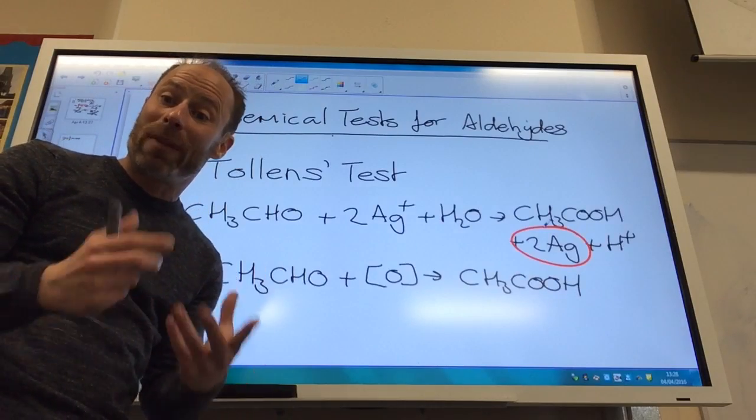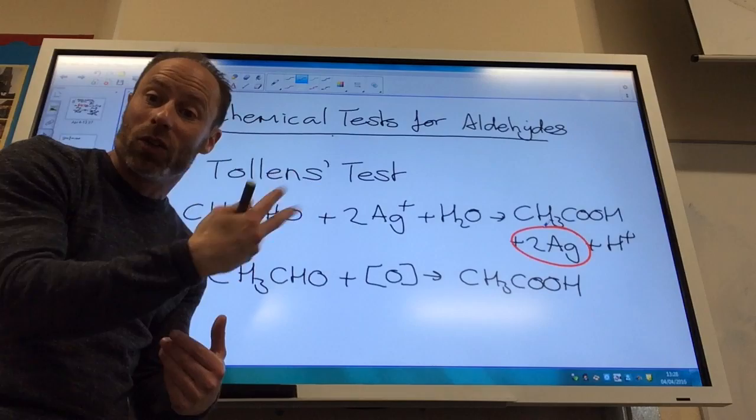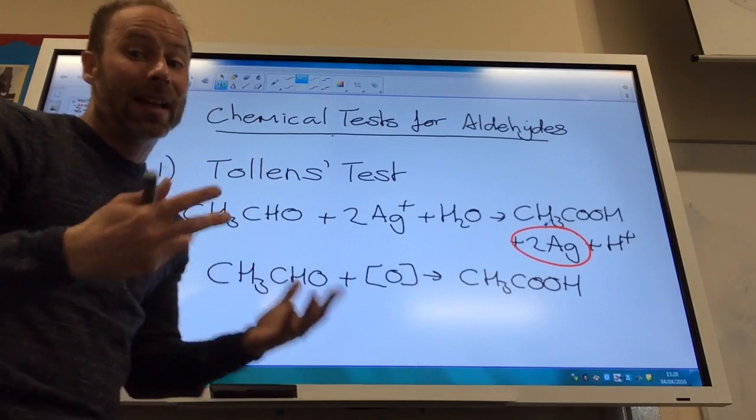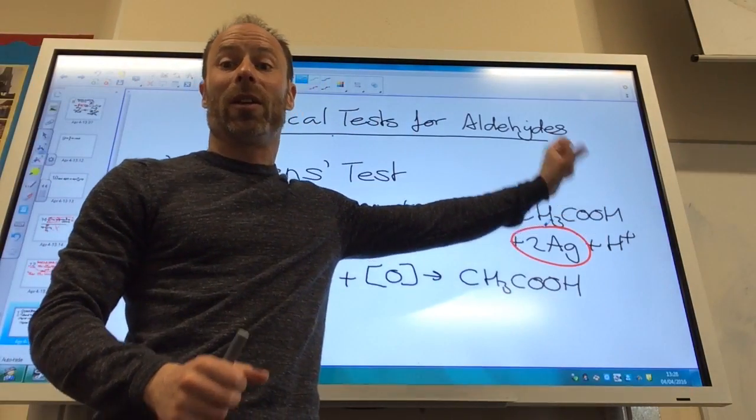So you see the silver metal, and if you do it carefully, you'll actually see the silver metal come out of solution and coat the surface of the glass. So you get this silver mirror effect if you do it right. It can be quite tricky. So that is Tollens test, which you need to know.